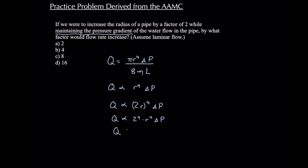Now again, we can further simplify this by taking 2 to the 4th, which is 16, times r to the 4th delta P. Now notice that our Q is now 16 of our original radius that we had. So this Q is going to be 16 times that of the original Q. So our answer is D.